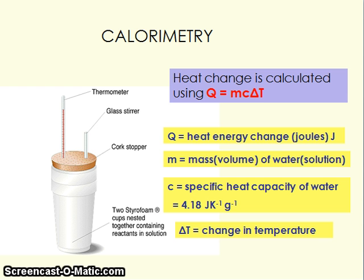This is an equation you should have met at GCSE. Heat change is calculated using Q equals mc delta T. Q is our heat change in joules, which is what we're trying to measure. m is our mass — it says volume in brackets because when doing these calculations it's often water we're using, and the density of water is one gram per decimetre cubed, so the mass of the liquid is the same as the volume. In most cases we'll make this assumption even for an aqueous solution.